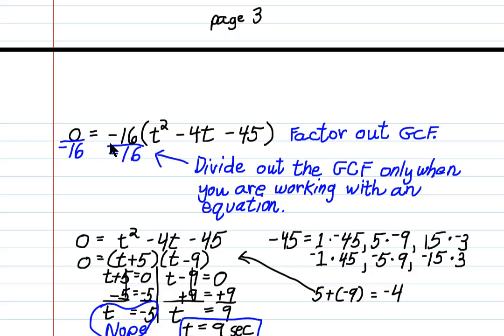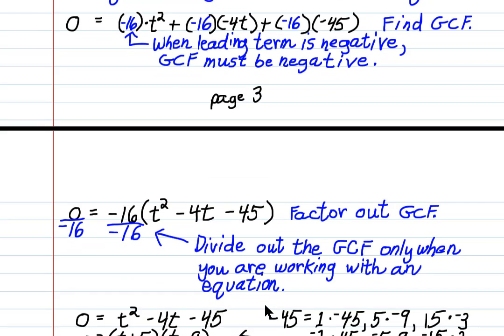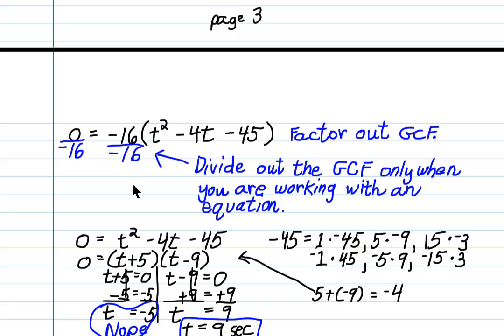I pull out the GCF to the front, and in parentheses, I put the leftovers. T squared, here, let's bring this back down. T squared minus 4t minus 45. That's where I get this. Then, because I have an equation, and I can do the same thing to both sides of the equation, I can divide negative 16 out and get it out of the way. Only when I'm dealing with an equation. So what I'm left with is 0 equals t squared minus 4t minus 45.